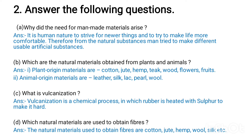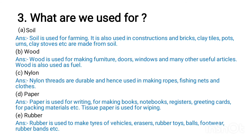Question 2d: Which natural materials are used to obtain fibers? Answer: The natural materials used to obtain fibers are cotton, jute, hemp, wool, silk, etc. Question 3: What are these used for?